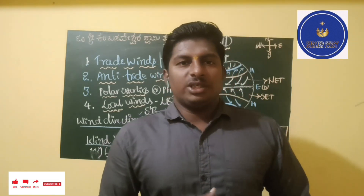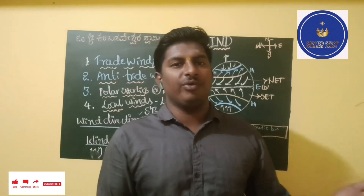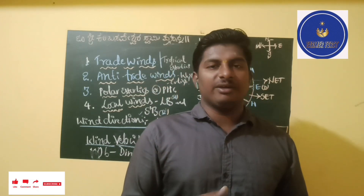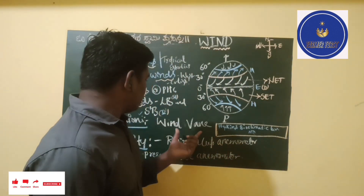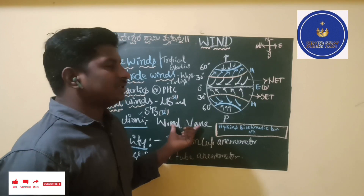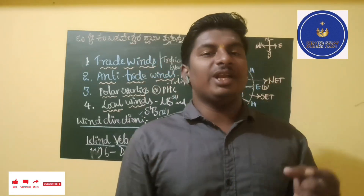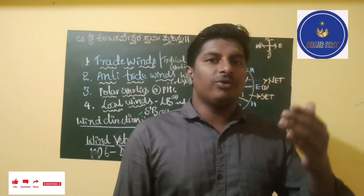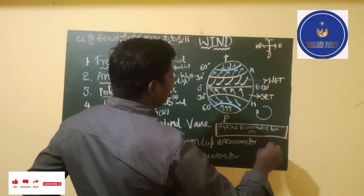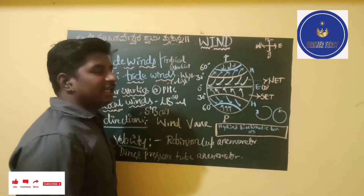There are two technical terms: windward direction and leeward direction. Windward direction means the direction from which the wind is flowing, and leeward direction means the direction to which the wind is flowing. Based on the direction of wind rotation, there are two types: veering winds, which move in a clockwise direction, and backing winds, which flow in an anti-clockwise direction.